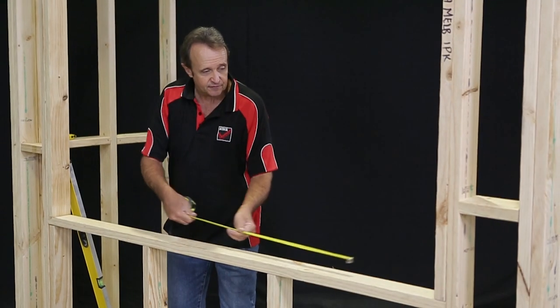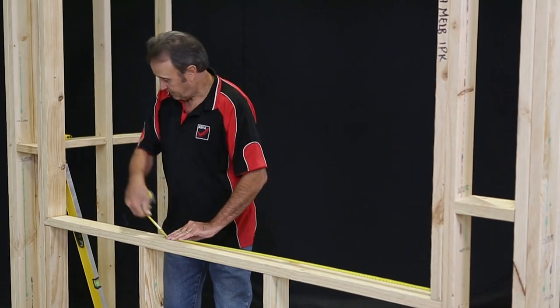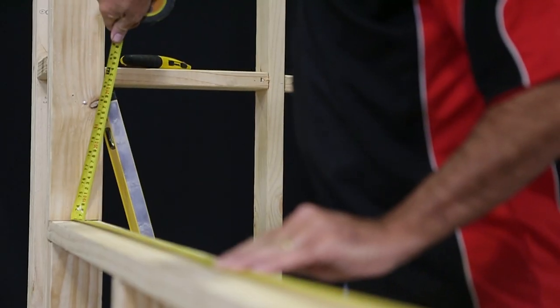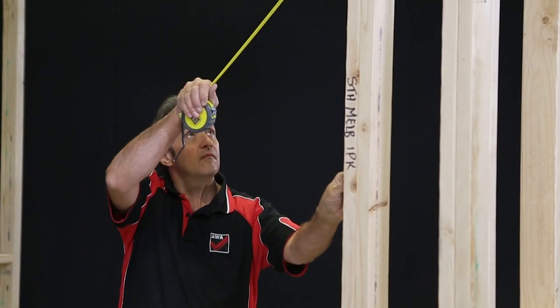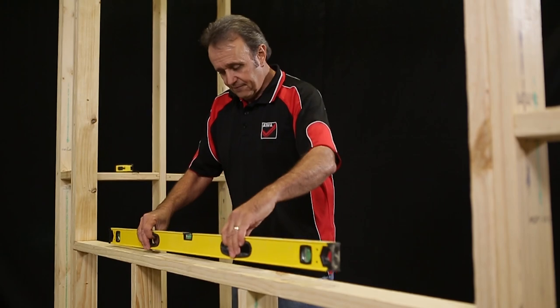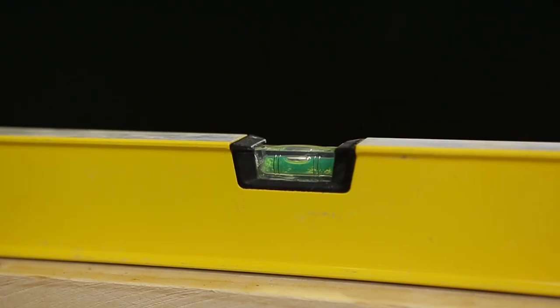The first thing we need to do is check the window opening to make sure the window is the right size. The opening should be about 20 millimeters bigger in height and width than the overall size of the window including the reveal. Using the level, check the opening is reasonably level and plumb.